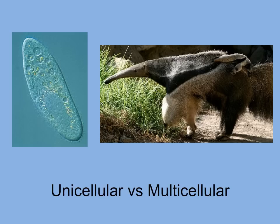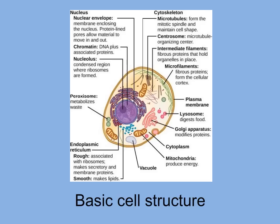In unicellular life, all processes occur within a single cell — it has structures to metabolize food, to excrete waste, to move, etc. Multicellular organisms have differentiated cells to perform these functions, such as a digestive system and an excretory system.